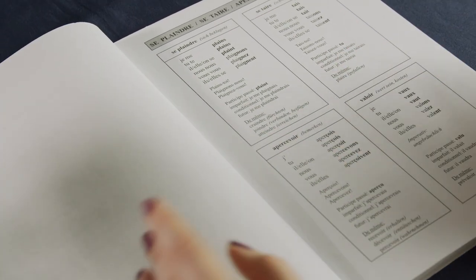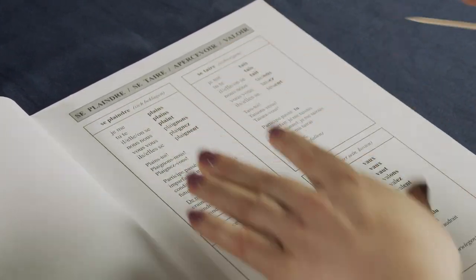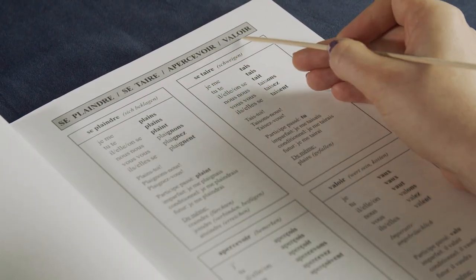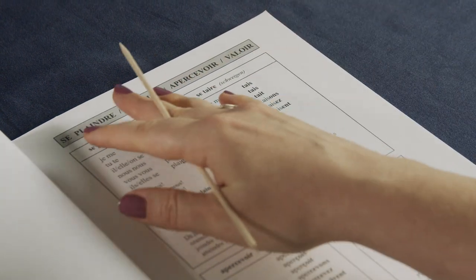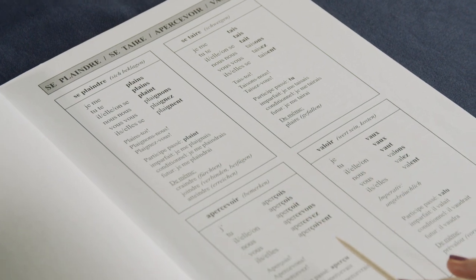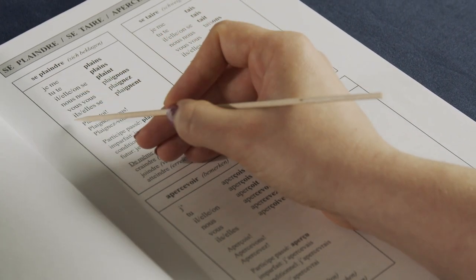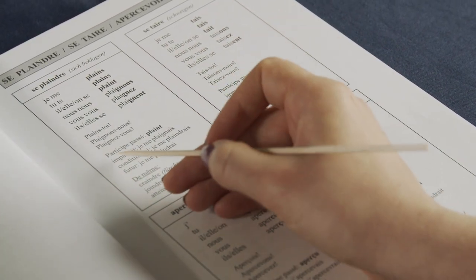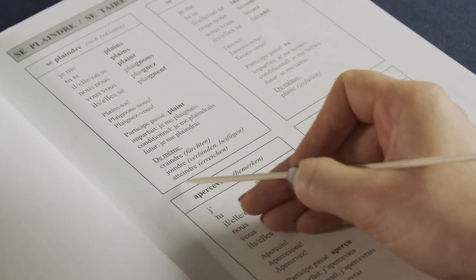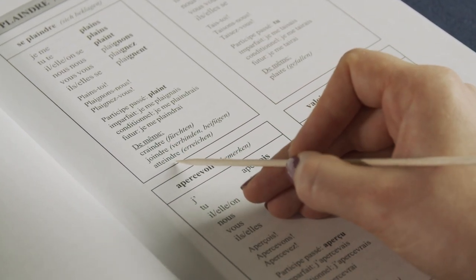So if we just look at the first chapter, you see this one is with irregular verbs: se plaindre, se taire, apercevoir and valoir. You have the information that you need for each of these verbs, all the different forms: participe passé, imparfait, conditionnel, futur. And other verbs that work in a similar way like craindre, joindre, atteindre.